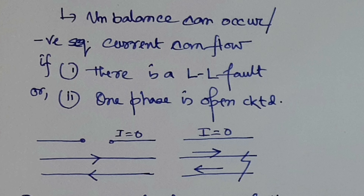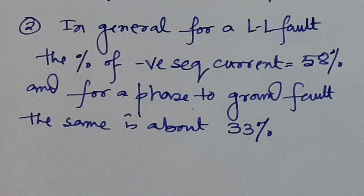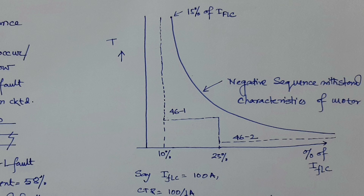For a line-to-line fault, the negative sequence component is 58% (i.e., 1/√3 times). For a phase-to-ground fault, it is about 33% (i.e., 1/3 times). Our relay setting must be such that it can detect this level of negative sequence current. The maximum allowable setting is 30% — you must set the negative sequence relay below 30% of full load current so that a single-phase ground fault is also detected.